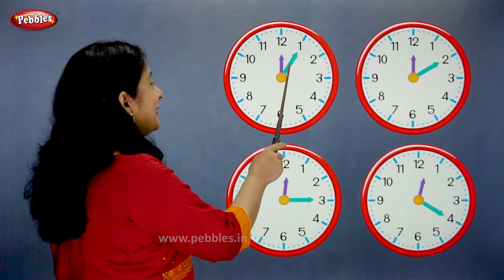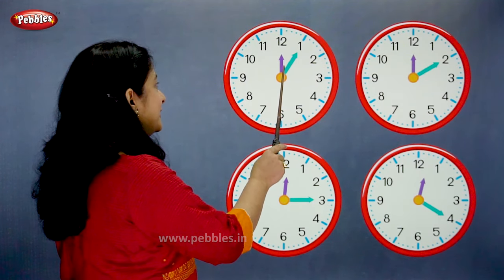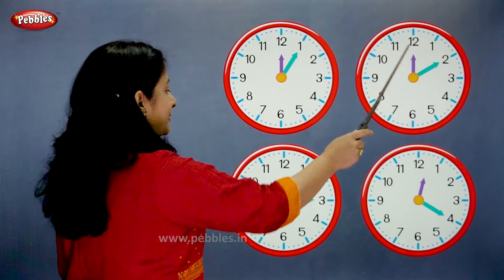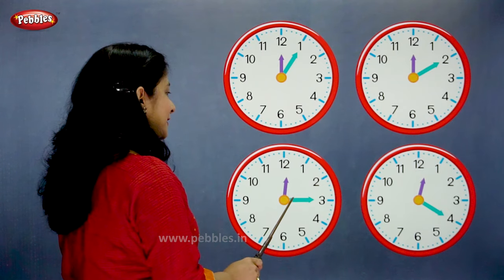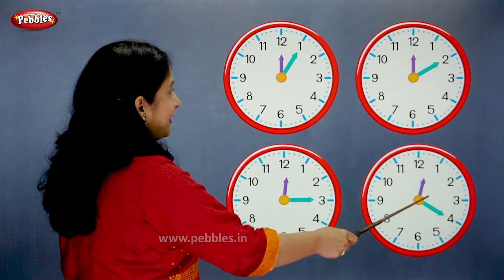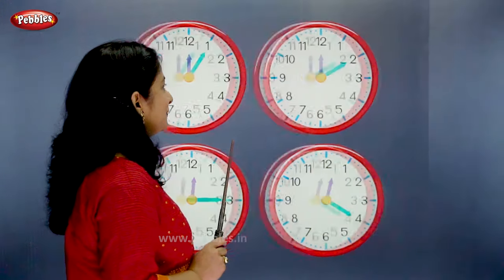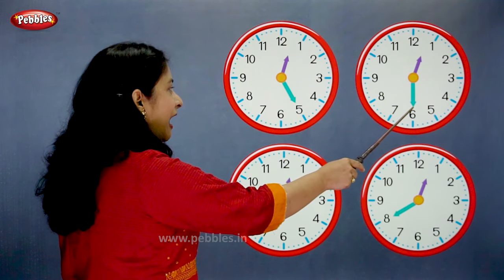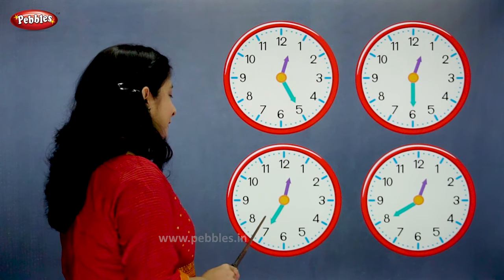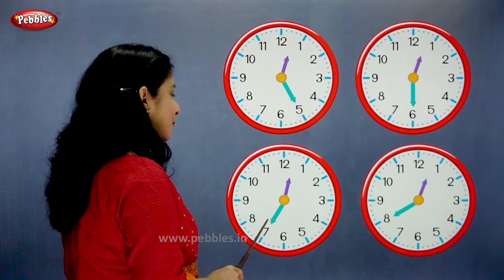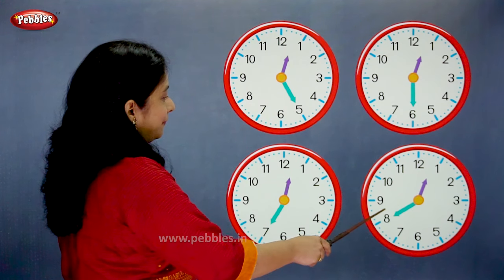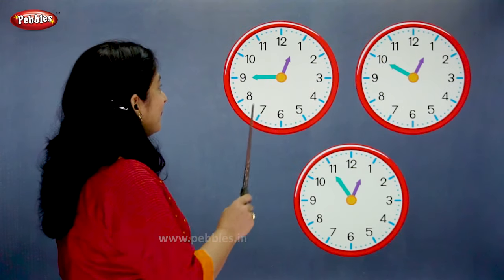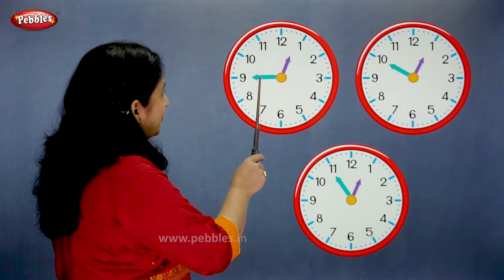When the minute hand is on 1, we say 5 past. 10 past. Quarter past. 20 past. 25 past. Half past. 25 to. 20 to. Quarter to. 10 to. 5 to.